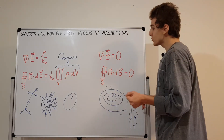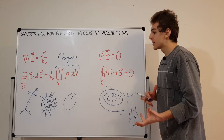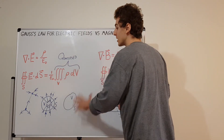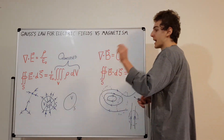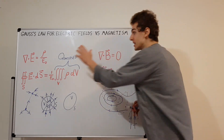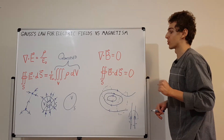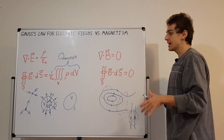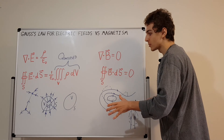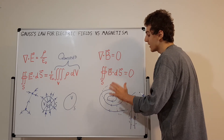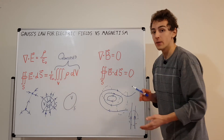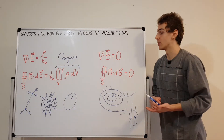Try drawing any magnetic or electric field distribution you can think of and verify that these laws hold. For any classical electromagnetism example, the electric field lines and magnetic field lines will always satisfy these two laws. That is fundamental to the nature of classical electrodynamics.